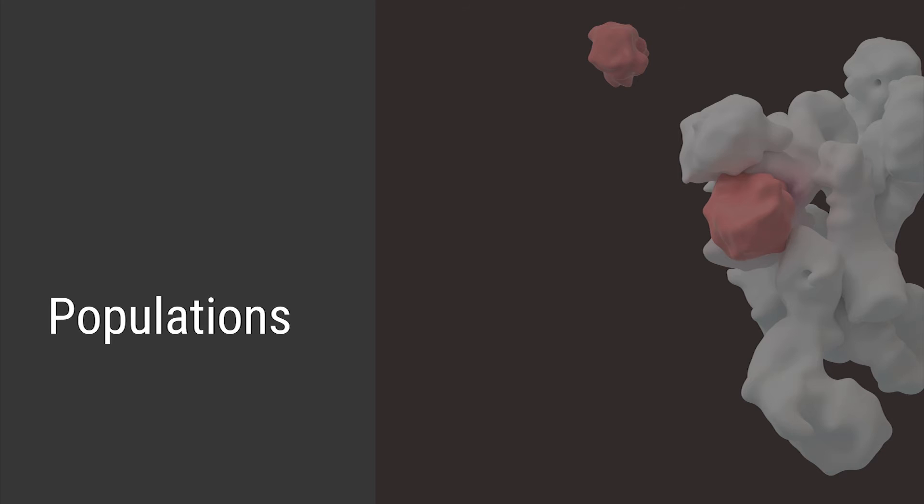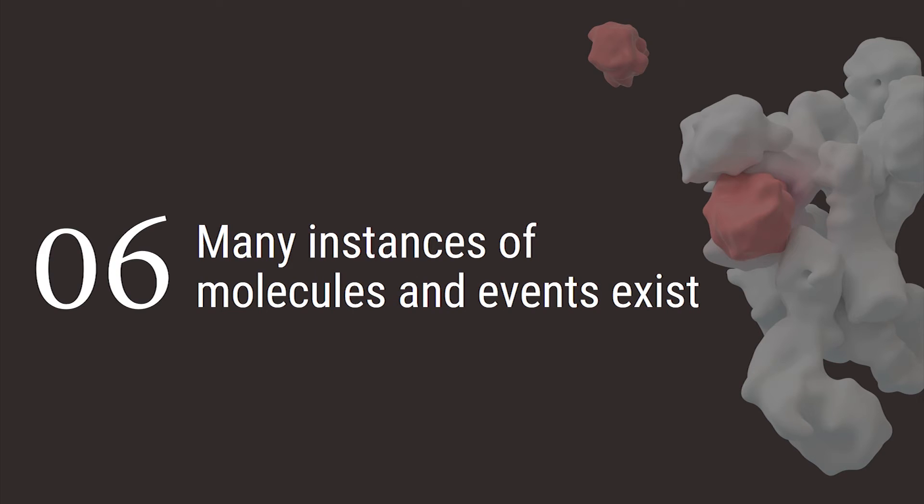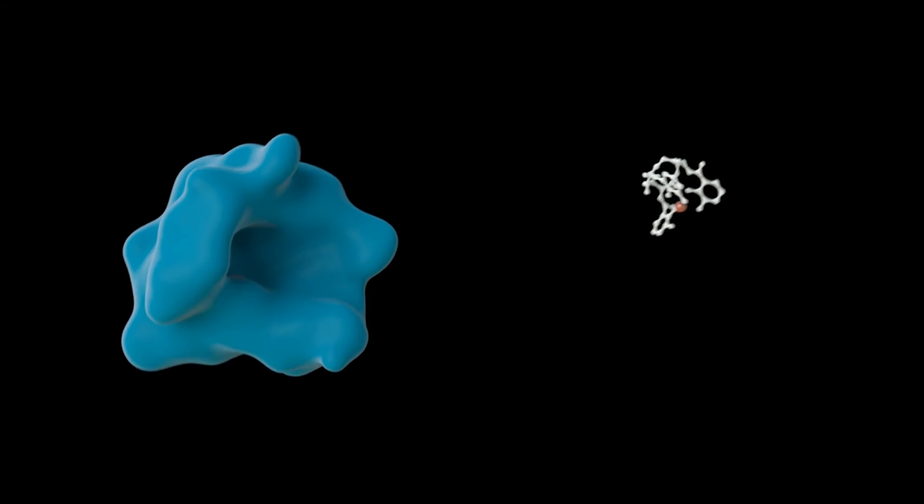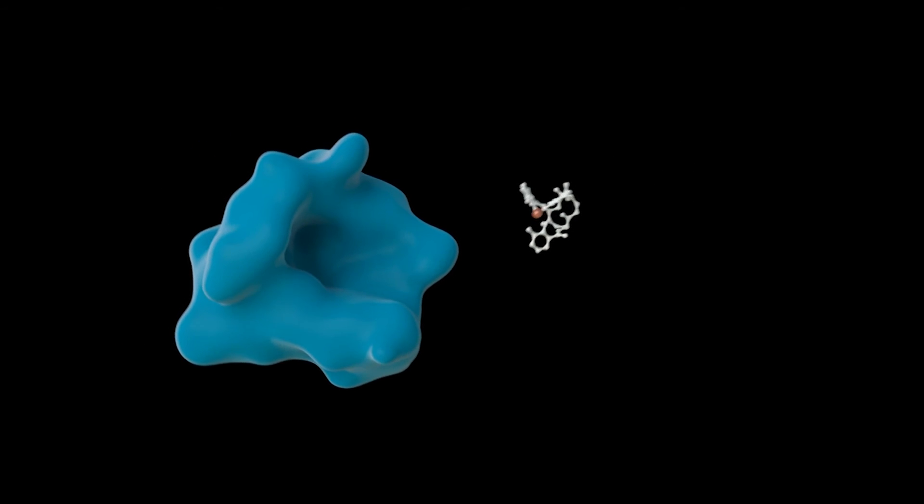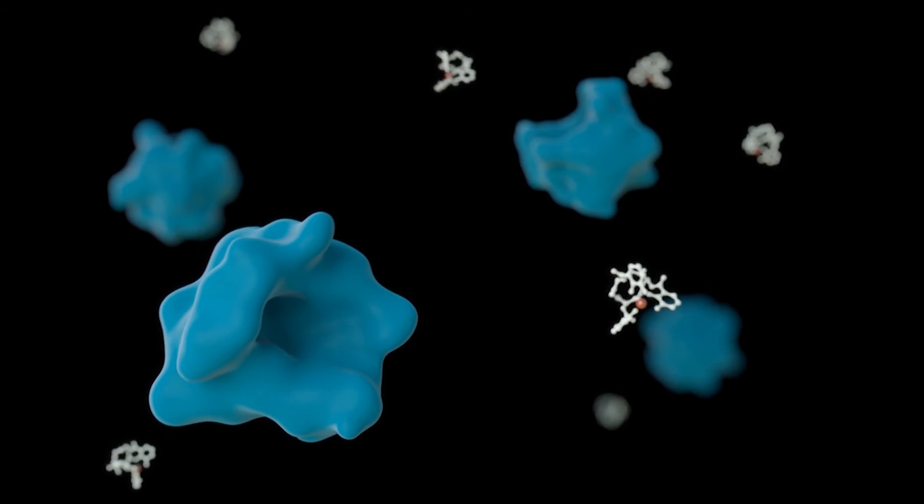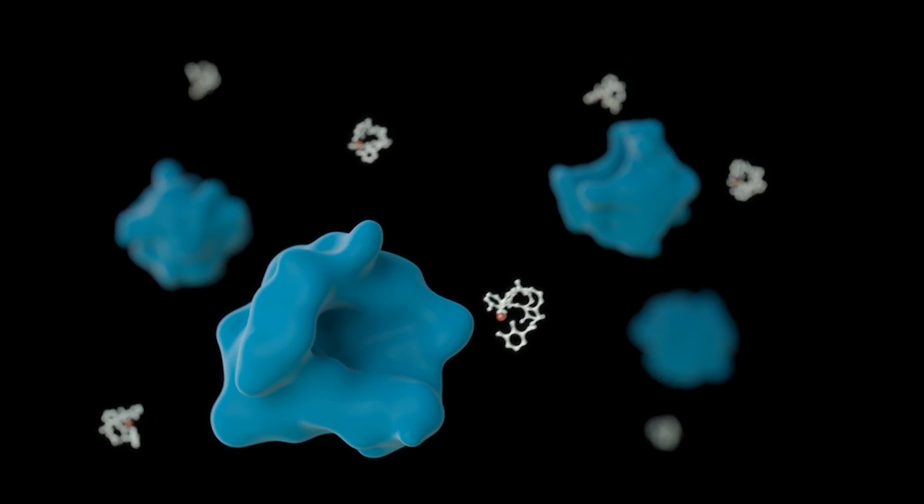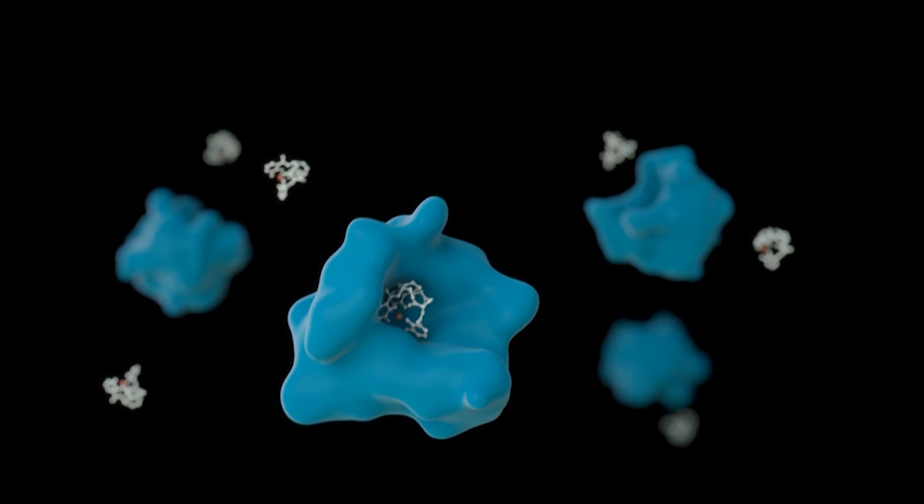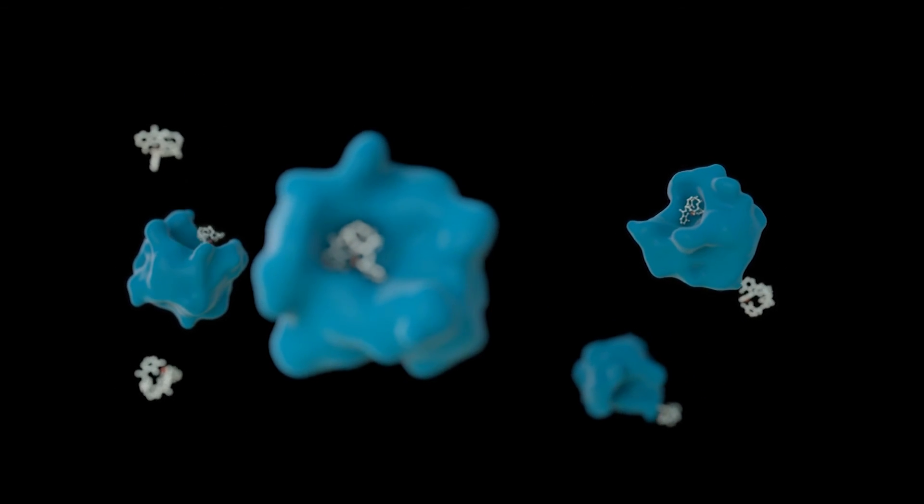And finally, one concept about populations. This conveys the idea that in a molecular environment, inevitably there's going to be more than one copy of a given molecule. So instead of showing a single copy of each molecule and maybe a binding event between them, we could instead show multiple instances of each molecule and start with one binding event in the foreground and then repetitions to support the same idea.